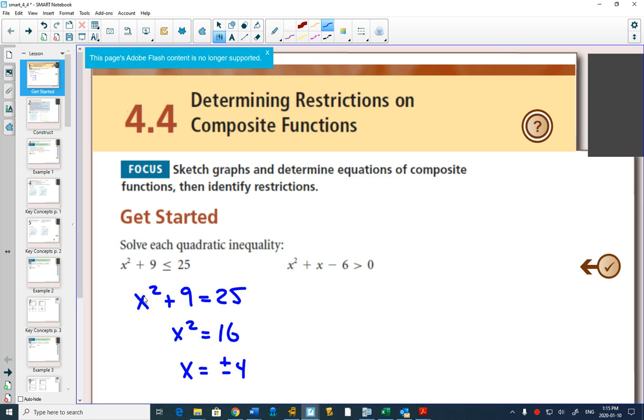A quadratic inequality is asking, what numbers make this less than or equal to 25? 4 and negative 4 make it equal to 25. But can you tell me a value that also works that makes it less than? Or tell me a value that doesn't work. In other words, plug something in, you're going to be right no matter what. You're either going to find something that's true or not true.